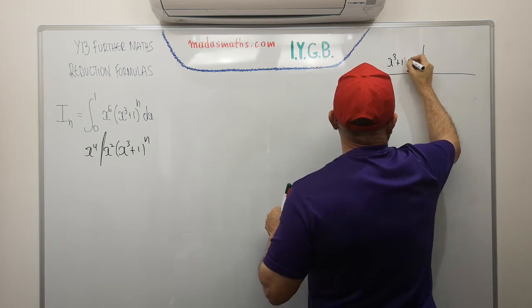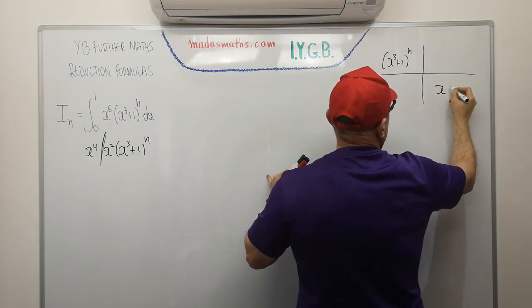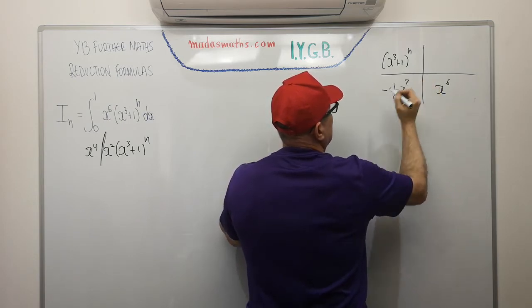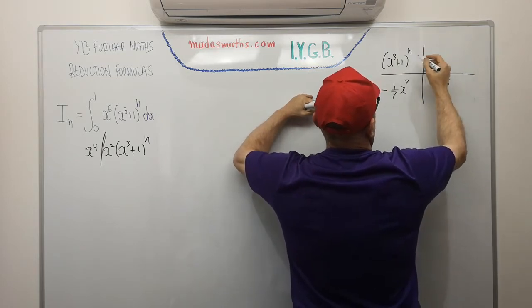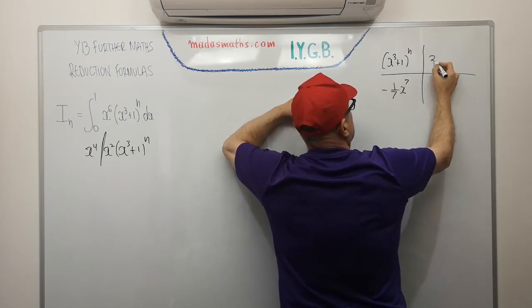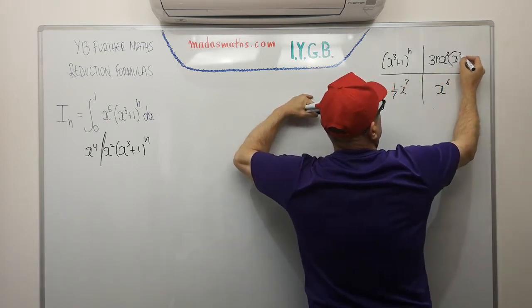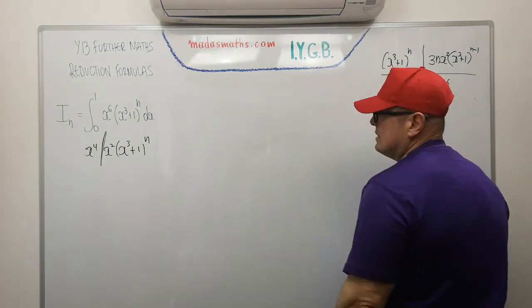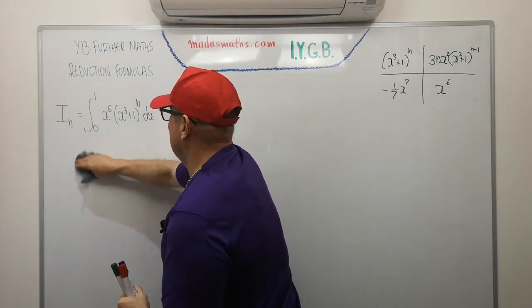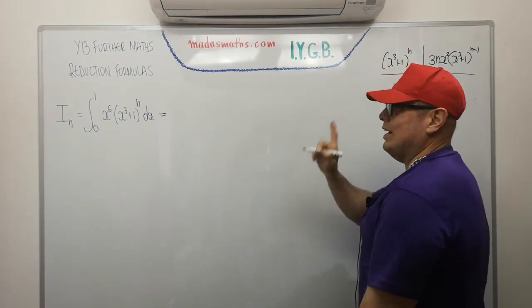So I'm going to put the x cubed plus one to the power of n up here, and the x to the sixth on the bottom. Integrate that, it's going to give me one seventh x to the power of seven. And differentiating that, I'm going to get a three from the x, so it's going to give me a three, an n from the power, an x squared from the chain, and all of this will go x cubed plus one to the power of n minus one.